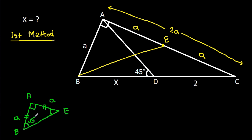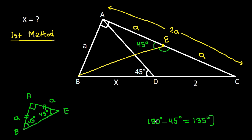So these two angles will be 45 degrees. This angle will be 45 degrees. So this angle will be 180 degrees minus 45 degrees, that will be 135 degrees. So angle ABE will be 135 degrees, and this angle will also be 135 degrees.